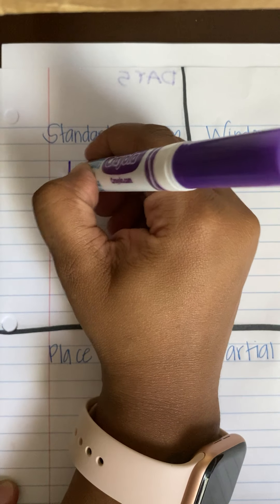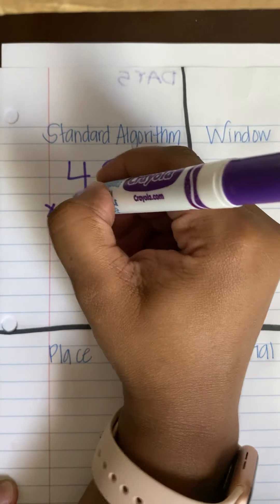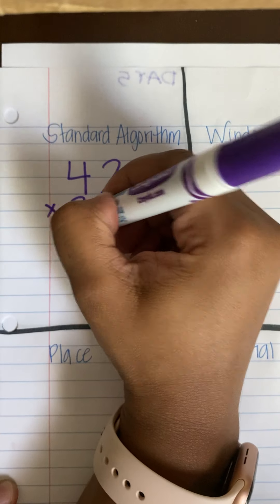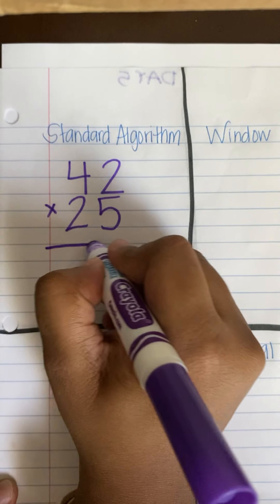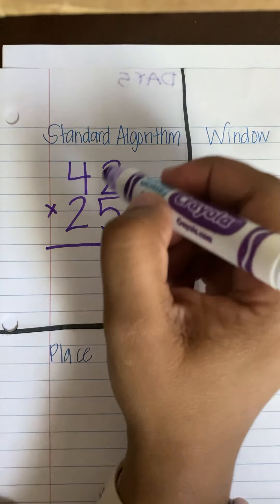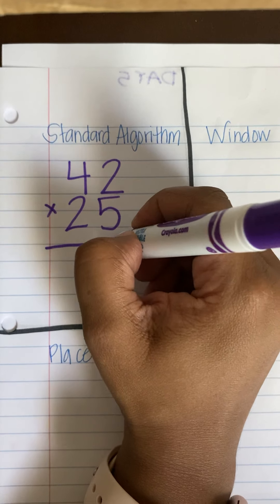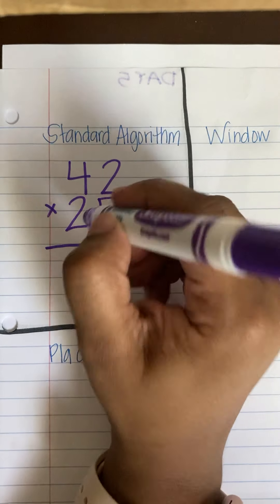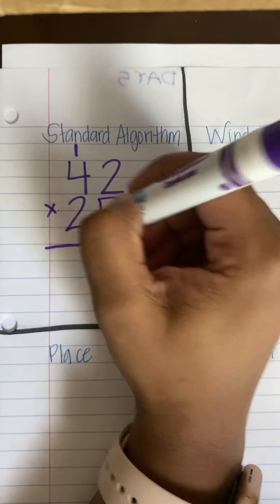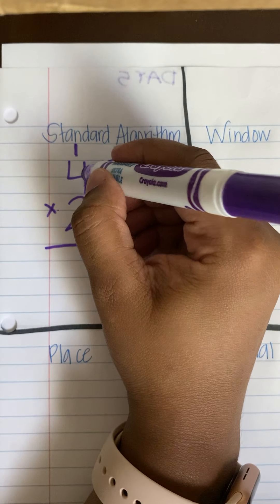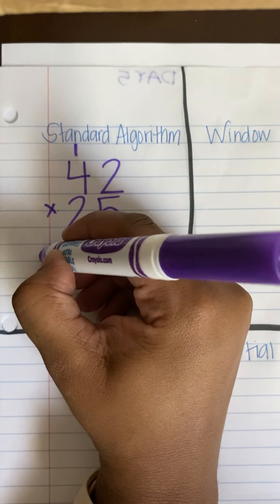Standard algorithm: 42 times 25. I know that five times two is 10. I'm going to put my zero here. Five times...